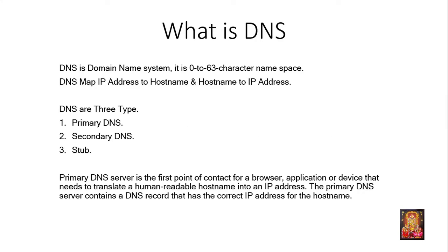What is DNS? DNS is Domain Name System. It is a 0 to 63 character namespace. DNS maps IP addresses to hostnames and hostnames to IP addresses. DNS has three types: primary DNS, secondary DNS, and stub.